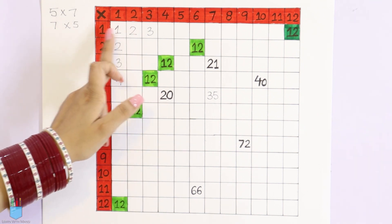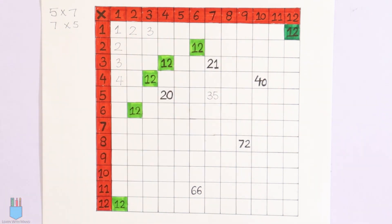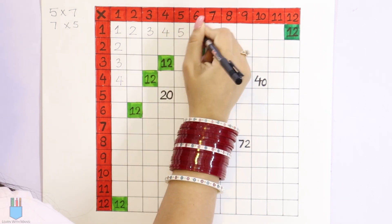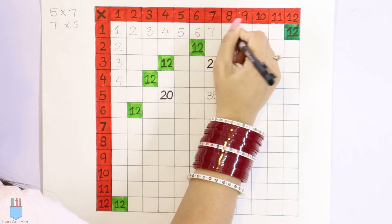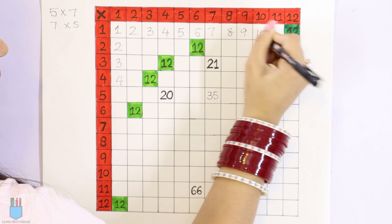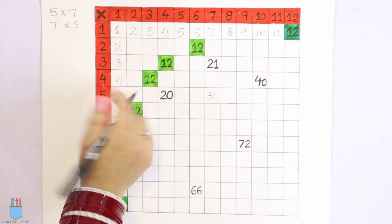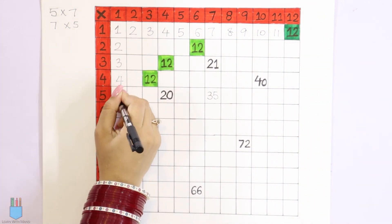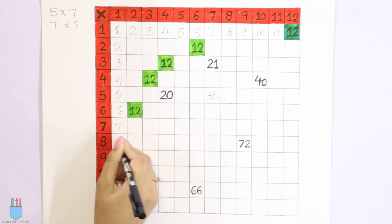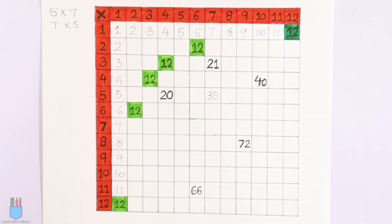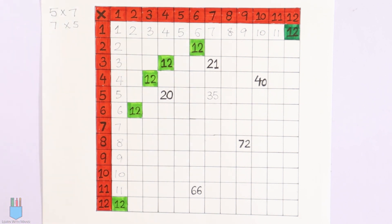Similarly, here is 1, 2, 3 — so we can fill it quickly. Continuing: 4, 5, 6, 7, 8, 9, 10, 11, 12. Again from the other direction: 1, 2, 3, 4, 5, 6, 7, 8, 9, 10, 11. So this section has also been filled.